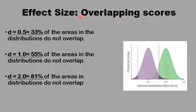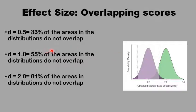Another way of estimating the effect size is to see how much of the scores of the two groups are overlapping. If there is too much overlap between the two sets of scores, then there is not much difference between the two groups. If there is no overlap at all, then they are really different and there is a big difference. We are looking at how much of the scores are not overlapping — if at least a third of the scores are not overlapping, this is a big difference. When the areas not overlapping is 55% or more than half, this is very big.